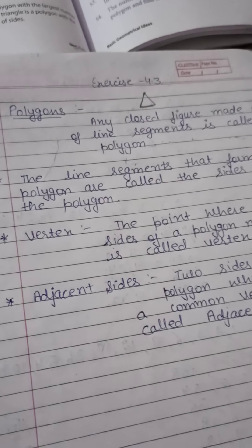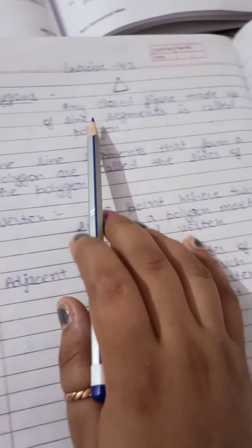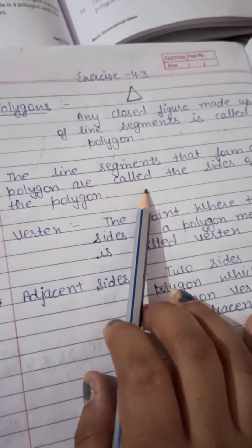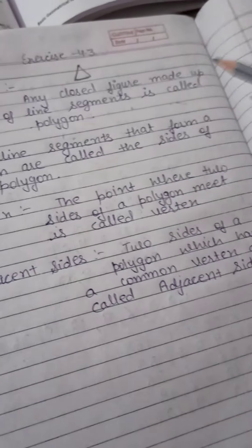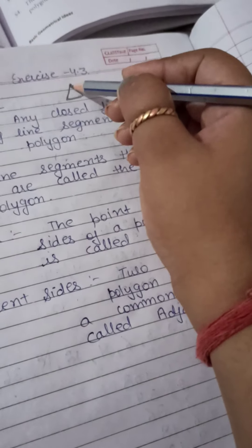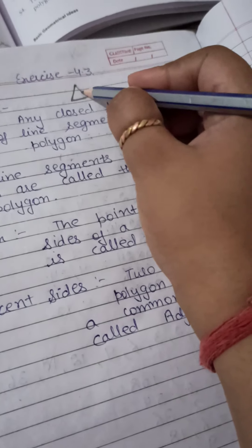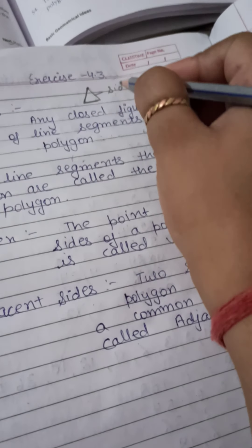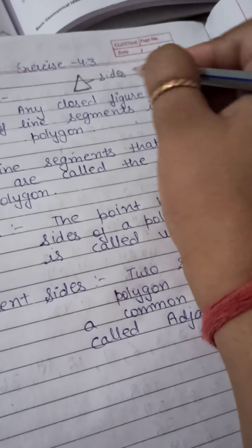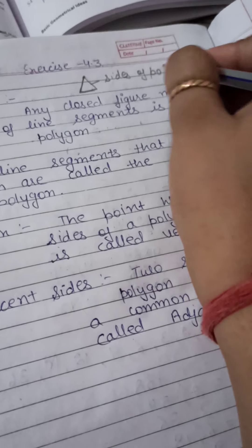Next, the line segments that form a polygon are called the sides of the polygon. See, these lines make the polygon, so these are the sides of the polygon.